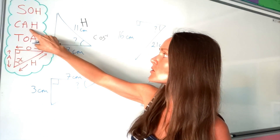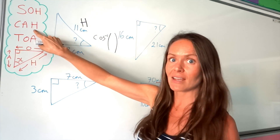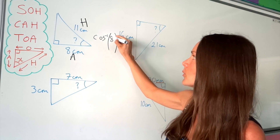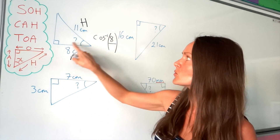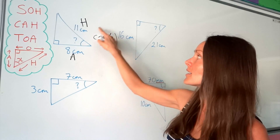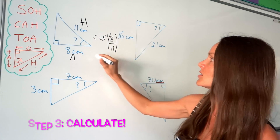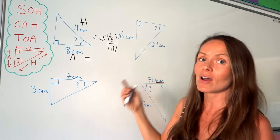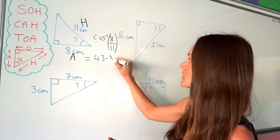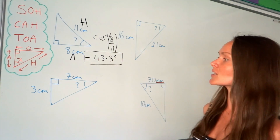Because we have A followed by H in SOHCAHTOA, we divide in that order: adjacent on top and hypotenuse underneath. So adjacent, which is 8, goes on top and the hypotenuse, which is 11, goes underneath. Put cos⁻¹(8/11) into your calculator — you can use the fraction button or type 8 divided by 11. Rounding to one decimal place, the first answer is 43.3 degrees.